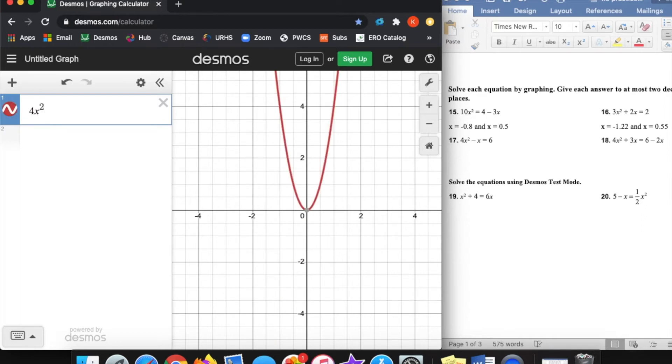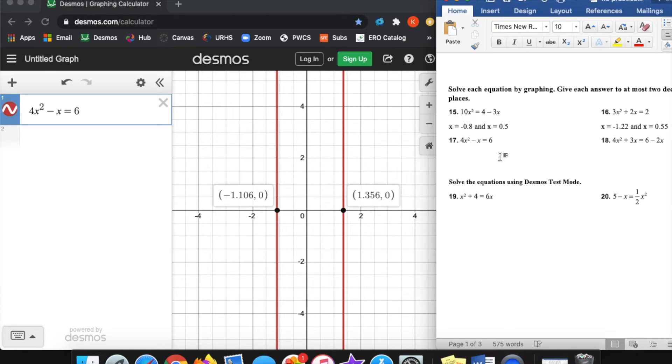Just working through these next two, 4x squared minus x equals 6. Again, two lines, similar, negative 1.106 and that one. So x equals negative 1.11, and x equals 1.36 if I round up.